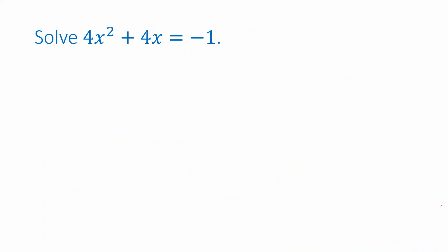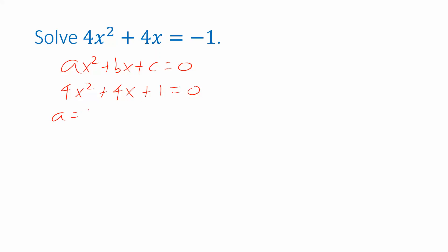Let's look at another example. This one is written a little differently — it's not in the standard form ax squared plus bx plus c equals 0. We can fix that by moving everything to one side, rewriting the equation as 4x squared plus 4x plus 1 equals 0. If you skip this step, you might accidentally let c be negative 1, which will not lead to the right answer.